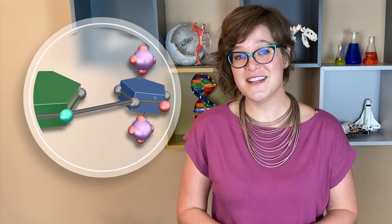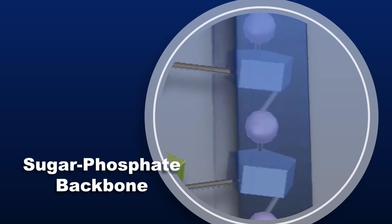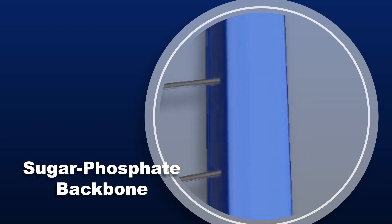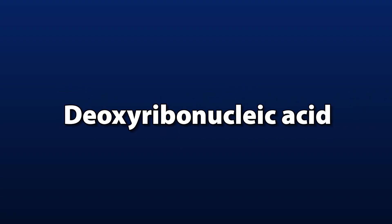Each strand of DNA is made up of nucleotides. Each nucleotide consists of a sugar, a phosphate, and a nitrogenous base. The phosphates make strong bonds with the sugar — this is sometimes referred to as the sugar-phosphate backbone. Like an actual backbone, this creates a stable structure for DNA. The sugar is a five-carbon molecule called deoxyribose. This is the D in deoxyribonucleic acid, or DNA.